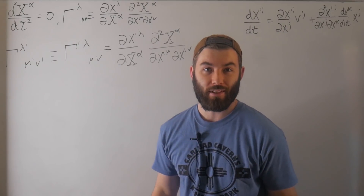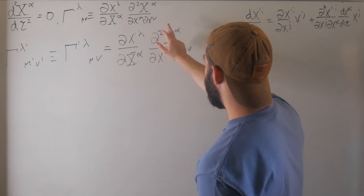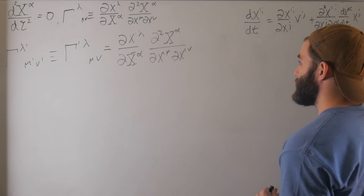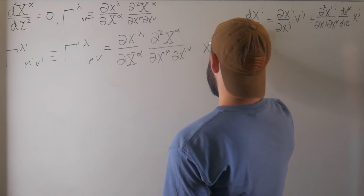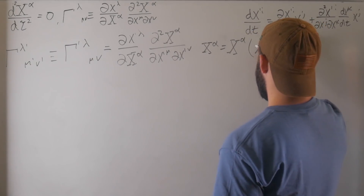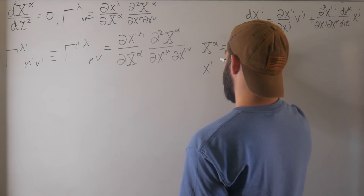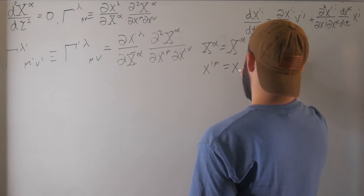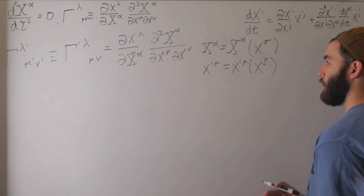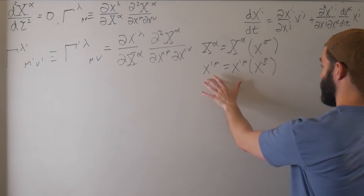The trick is always kind of the same. We have new variables that are functions of old variables — x-prime-lambdas and x-alphas that are functions of x-mu. This is just screaming 'chain rule.' So we note that big X-alpha is a function of x-sigma, and x-prime-mu is a function of x-rho. The reason I'm using different variable names is not because they're different coordinates — it's still the same set — but I don't want to reuse variables when looking at different elements.